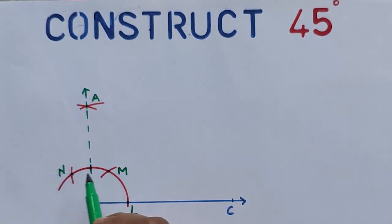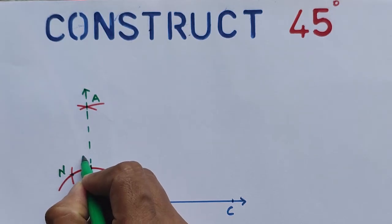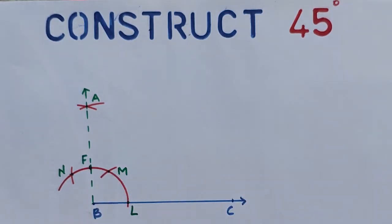And this line intersects the bigger arc at F. We know that angle ABC is 90 degrees. So this angle measure is 90 degrees.